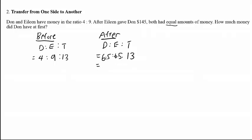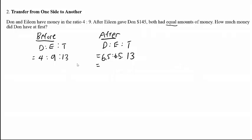Of course, in a ratio we shouldn't deal with decimals. So we have to multiply every term by 2. Times 2 gives us 13 and here times 2 gives 26.